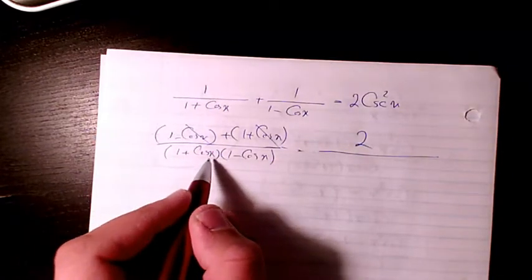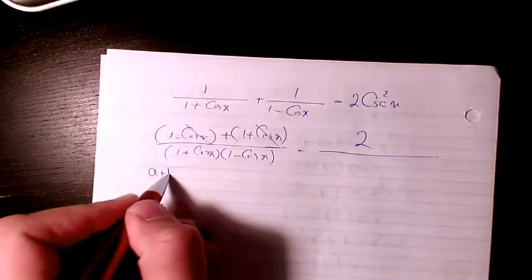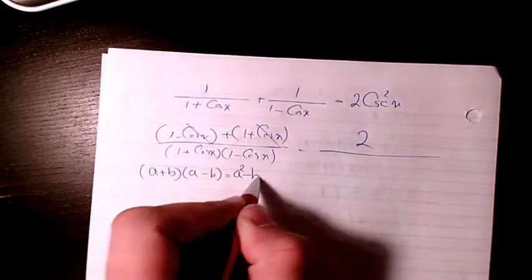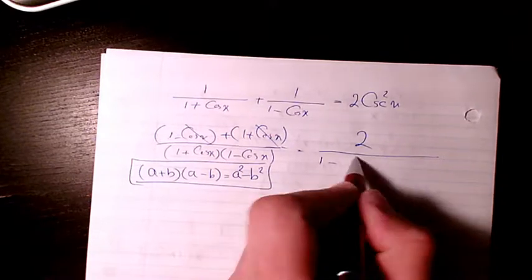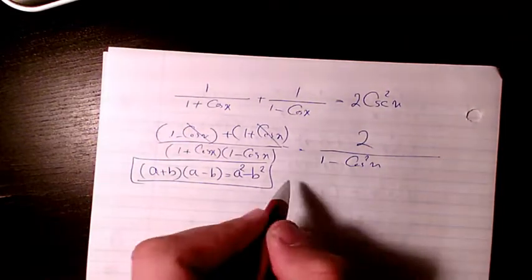Here I have 1 plus cosine x times 1 minus cosine x is the difference of squares. As you remember we had it many times so we have 1 minus cosine squared x because 1 squared is the same as just 1.